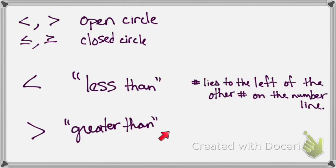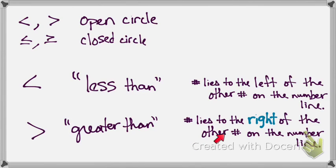So now if I say something is greater than something, so like negative two is greater than negative five, that means the negative two lies to the right of the other number on a number line. So it lies to the right of the number line.